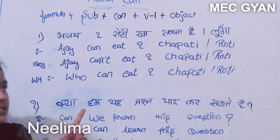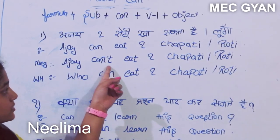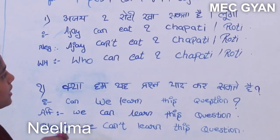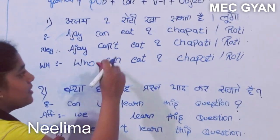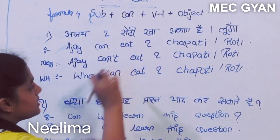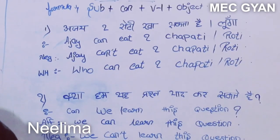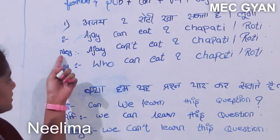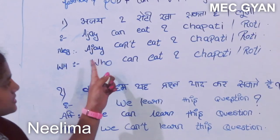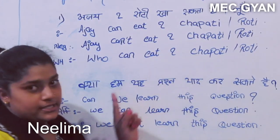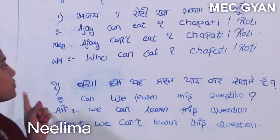Note: do not write 'Ajay can't eat' because that sentence is incorrect here. The correct negative form is: Ajay can't eat two chapatti or roti.